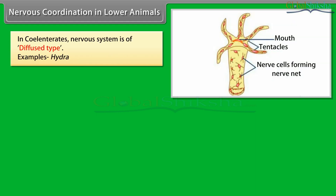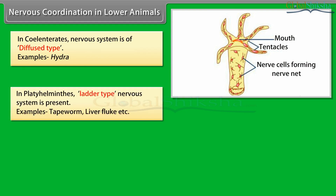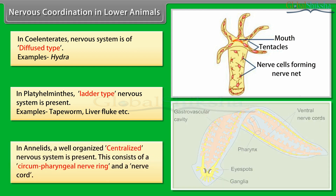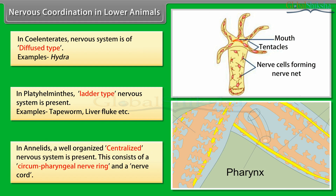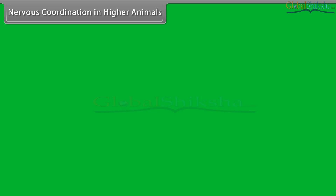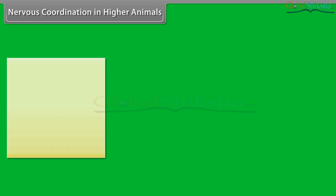In coelenterates, the nervous system is of diffused type; example: Hydra. In platyhelminthes, a ladder-type nervous system is present; examples: tapeworm, liver fluke, etc. In annelids, a well-organised centralised nervous system is present, consisting of a circumpharyngeal nerve ring and a nerve cord. In arthropoda, a centralised nervous system like annelids is present, but their nerve ring is circumesophageal.